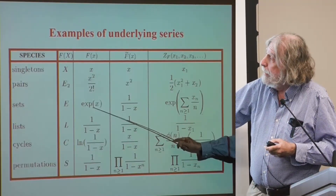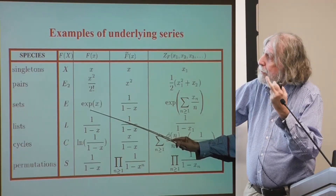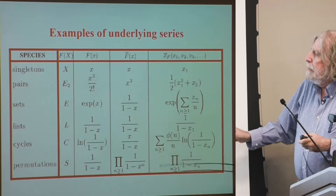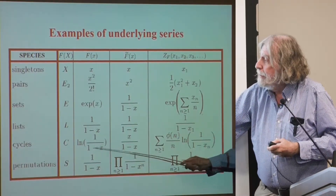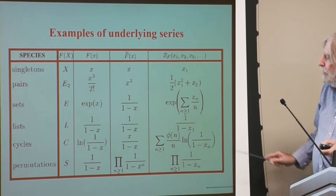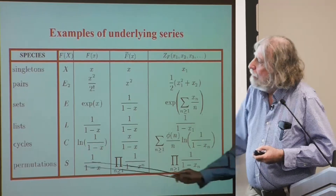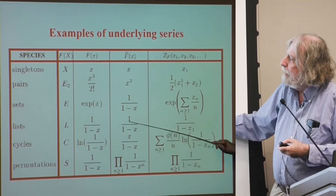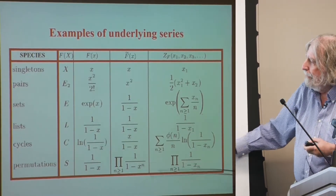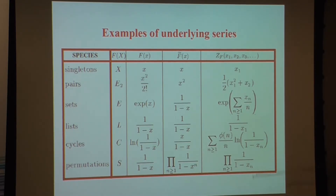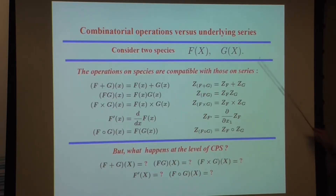For sets, the underlying exponential counting series is the exponential function, since there is one set for each cardinality. For cycles, the logarithm arises, and for the cycle index series of cycles, the Euler function occurs. For the tilde series of permutations, an infinite product appears. Permutations and lists have the same underlying exponential generating series but not the same tilde series. The tilde for permutations is the partition function of Ramanujan, which counts permutations up to isomorphism — that corresponds to integer partitions. Given two species, the classical series can be very easily computed, and they are compatible with the operations.